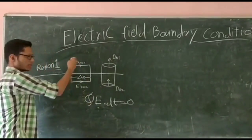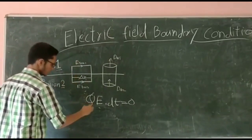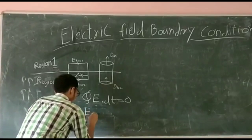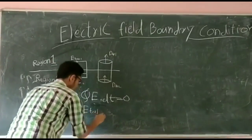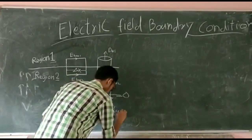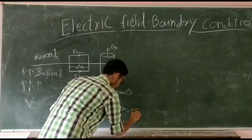We can apply the boundary condition to get E_tan1 minus E_tan2 equals 0.